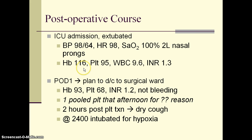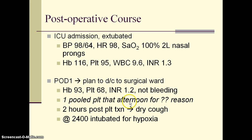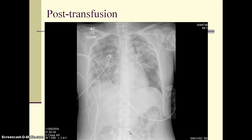Her hematologic parameters showed a hemoglobin of 116 (mildly reduced), platelets mildly reduced at 95, white cell count normal, and INR minimally elevated at 1.3 — but she was not bleeding. On post-op day one, planned for discharge to the surgical ward, her afternoon platelet count was 68. She was not bleeding, but received one full platelet transfusion. Two hours after the platelet transfusion, she developed a dry cough, and by midnight she was intubated for hypoxia. Her post-transfusion chest x-ray showed new bilateral lung infiltrates.